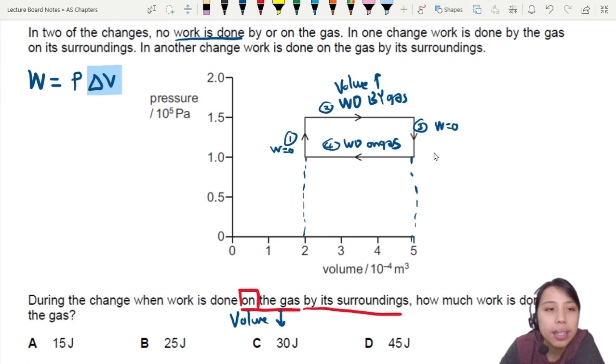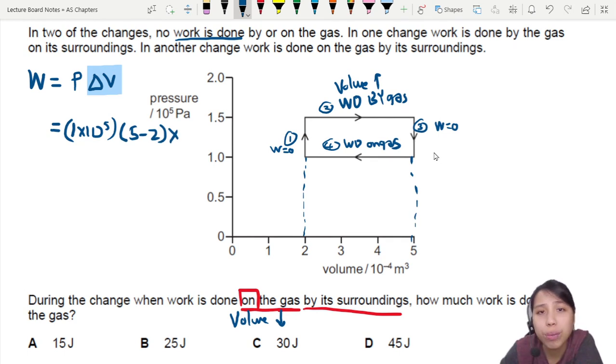So you can find pressure, which is constant, one times ten to the five times the change in volume. What's the change in volume? Five minus two. Positive or negative doesn't mind at this stage. So just take the change in volume, five minus two. You can do two minus five. That's fine with me too. So this will be ten to the negative four.